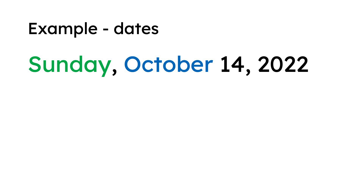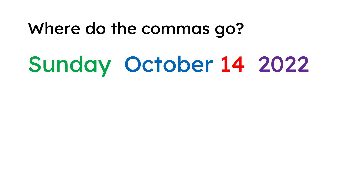What is the date, or the number? 14 is the date. And what is the year? The year is 2022. 14 is the date of the month. Now, remind me — where do I put the commas? I put a comma after Sunday, and a comma after 14.